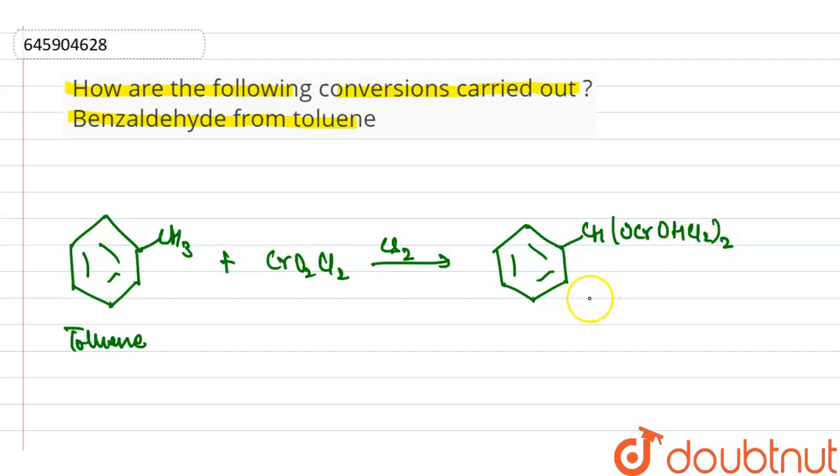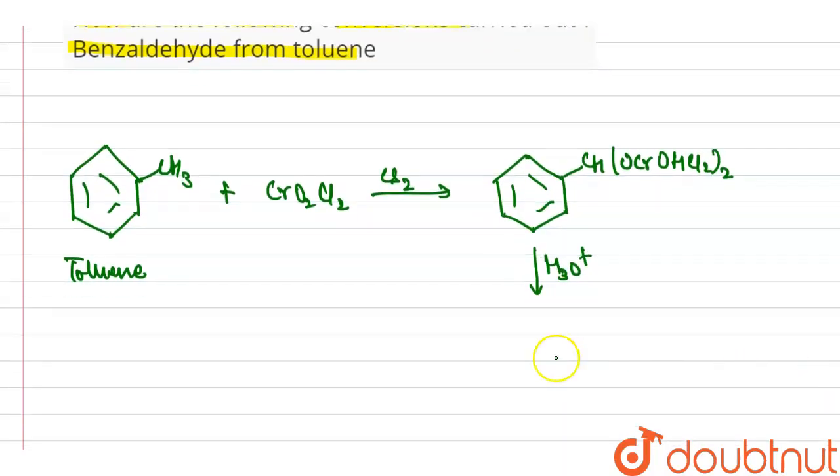When it reacts with hydronium ion, then it will be converted into benzaldehyde. That is our benzaldehyde and the chromium complex.